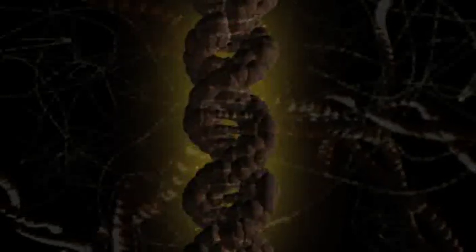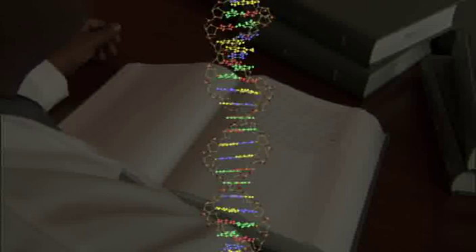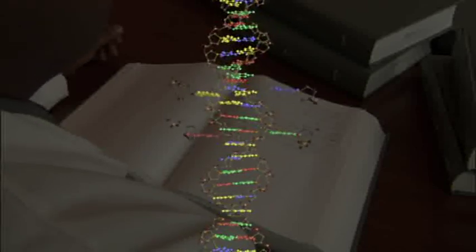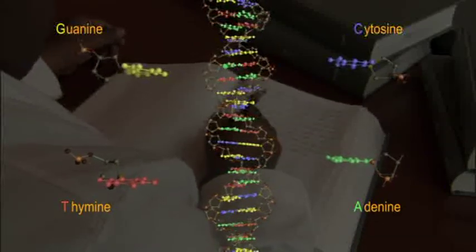Each of these rungs is just one of the 3 billion ladders that make up the book of our instruction manual. These steps of the DNA ladder are composed of just four different molecules: adenine, thymine, cytosine, and guanine.